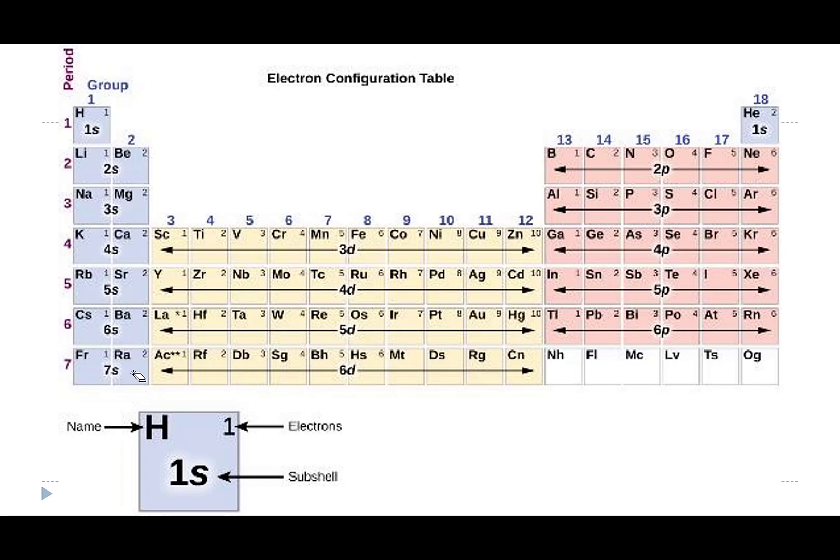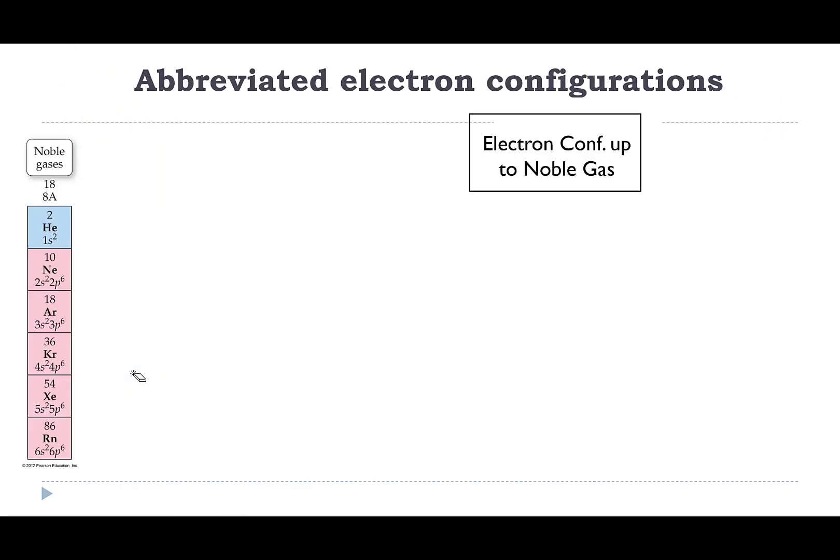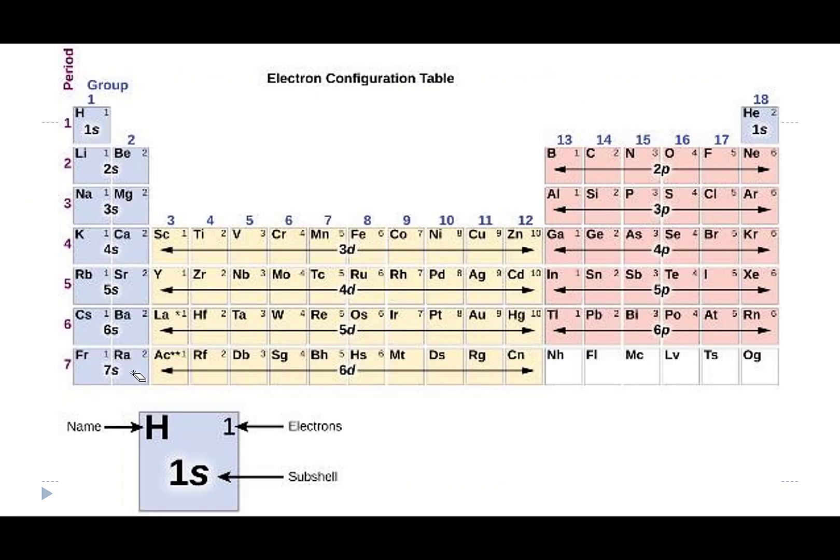First and foremost, the noble gas configuration hinges on the noble gases. Where are the noble gases? The noble gases are in family 18 or 8A, so these guys all the way at the end are the noble gases.